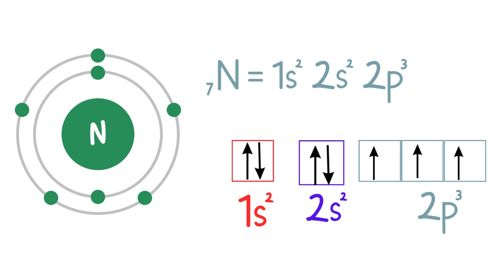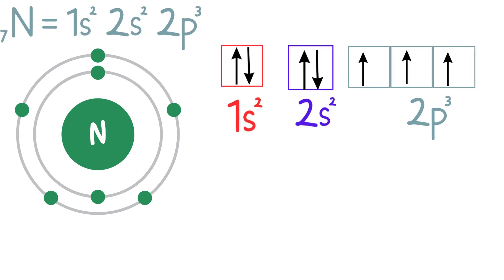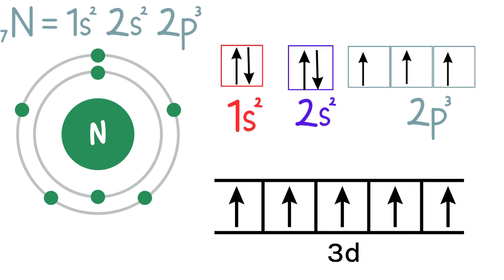Hund's rule also applies to more complex configurations like d and f orbitals. For example, in the d block of the periodic table, the 5d orbital follows the same principle. Each orbital gets one electron before any pairing happens.